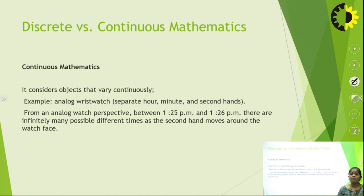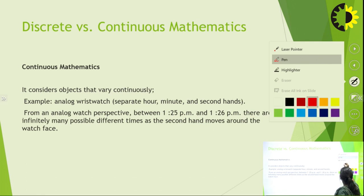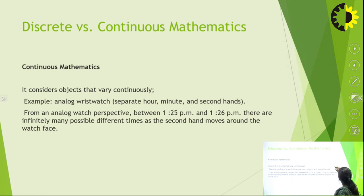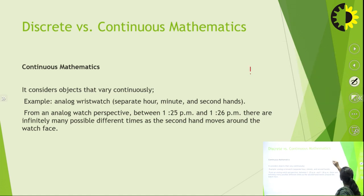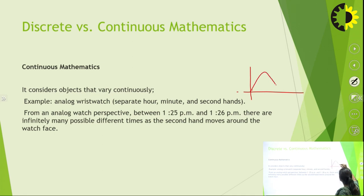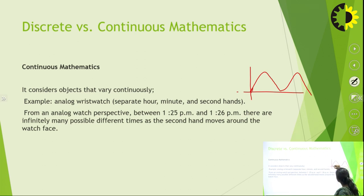This type of mathematics is known as continuous mathematics. If we form a graph of continuous mathematics, it will be a continuous curve — for each and every point, it varies a value.